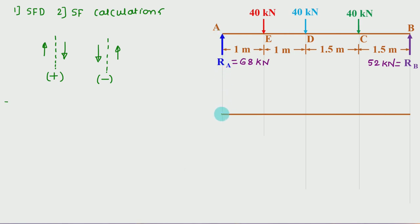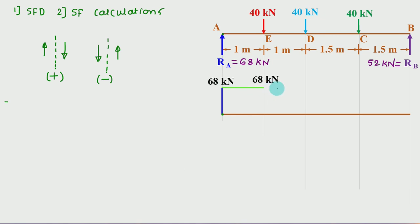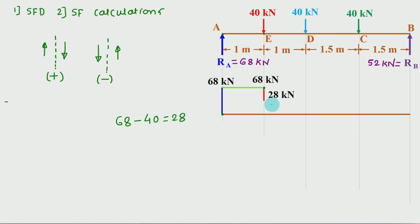At point A, reaction RA is upward with value 68 kN — so draw a vertical upward line of magnitude 68 from this point. From A to E there is no load, so the SFD is parallel to the x-axis with value 68. At point E there is a 40 kN downward load, so 68 minus 40 = 28 kN.